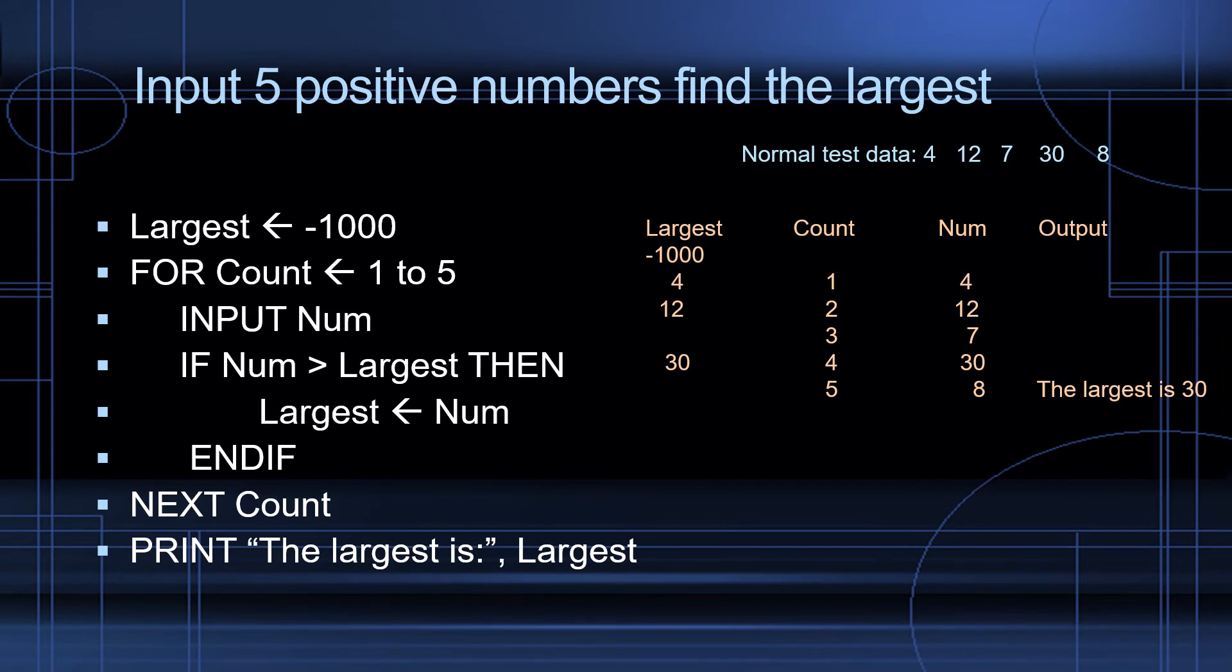Let's have a look at the trace table. So I have some sample data, some normal data, 4, 12, 7, 30, and 8. Now, at the very beginning, largest is equal to negative 1,000.